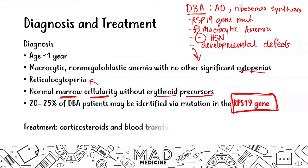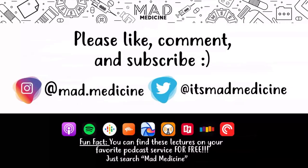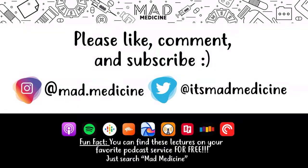When it comes to treatment, you can give corticosteroids and blood transfusions. Hematopoietic stem cell transplants can also be given to patients who are not improving with steroids — if you give corticosteroids and the patient doesn't improve, you can proceed with a hematopoietic stem cell transplant. That's everything you need to know for Diamond Blackfan anemia.